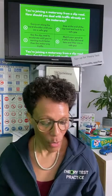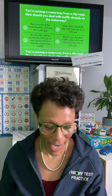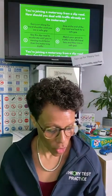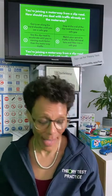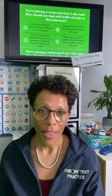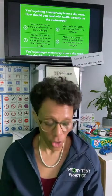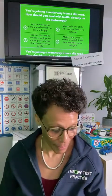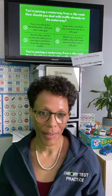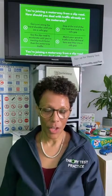Next question: you're joining a motorway from a slip road — how should you deal with traffic already on the motorway? Should you A: carry on along the hard shoulder until you see a safe gap; B: stop at the end of the slip road and look for a safe gap; C: accelerate until you're moving much faster than the motorway traffic; or D: match your speed to the traffic in the left-hand lane and filter into a safe gap? Think about which answers involve being safe.